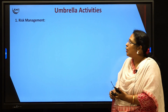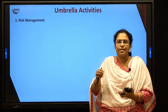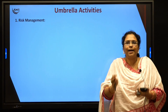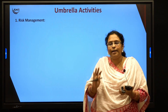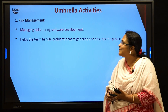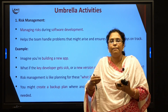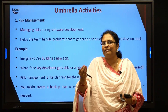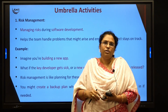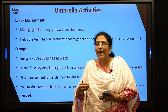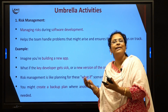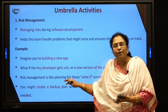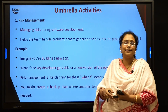Let us look at the last topic: umbrella activities. These are the background activities in the process framework that make sure quality is maintained at every step of software development. The first is risk management — making sure that if any issue occurs during development, you know how to resolve it. For example, if your main developer is on leave, you must have a backup plan with another developer available to replace that person.